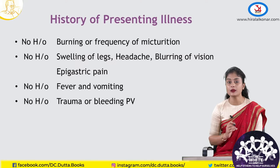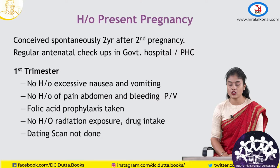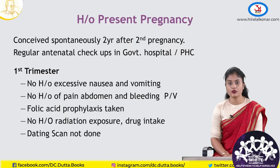Coming to the present pregnancy, she conceived spontaneously 2 years after her second pregnancy, had regular antenatal checkups in a government hospital — a PHC. First trimester: no history of excessive nausea, vomiting, no history of pain abdomen or bleeding PV, and folic acid prophylaxis was taken. No history of radiation exposure or drug intake, and her dating scan was not done.